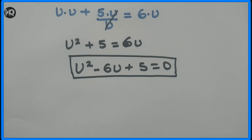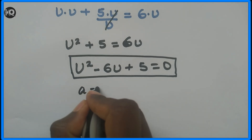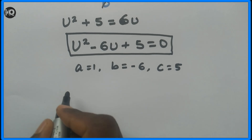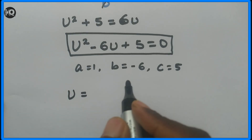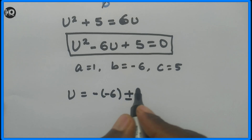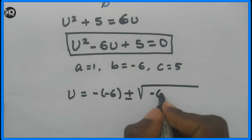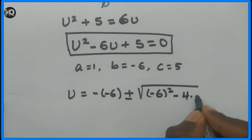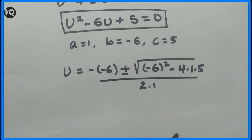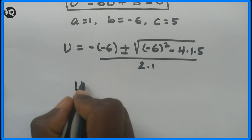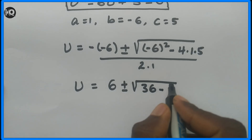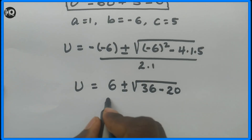Here a equals 1, b equals minus 6, and c equals 5. Applying the quadratic formula: u equals minus b plus or minus the square root of b squared minus 4ac, all divided by 2a. Substituting: u equals 6 plus or minus the square root of 36 minus 4 times 1 times 5, divided by 2.